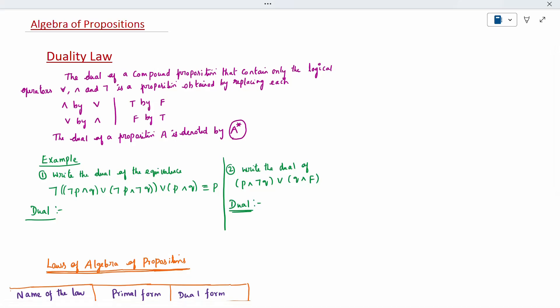Today's topic is algebra of propositions. In this we learn how many laws are there. There are totally nine laws. Before going with the laws, what do you mean by duality law? The duality is nothing but opposite. Opposite means the symbol. The dual of the component proposition contains only logical operations. Conjunction and disjunction will be replaced by another symbol.